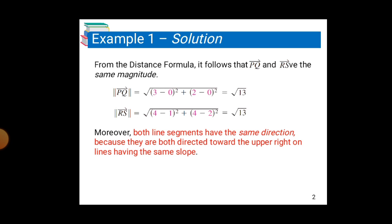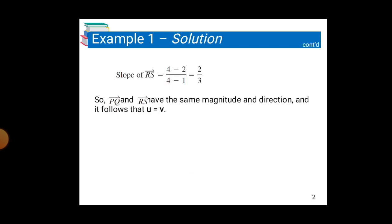Moreover, both line segments have the same direction because they are both directed towards the upper right on lines having the same slope. Slope of PQ = (2 - 0)/(3 - 0) = 2/3. Slope of RS = (4 - 2)/(4 - 1) = 2/3. So, vectors PQ and RS have the same magnitude and direction, and it follows that u = v.